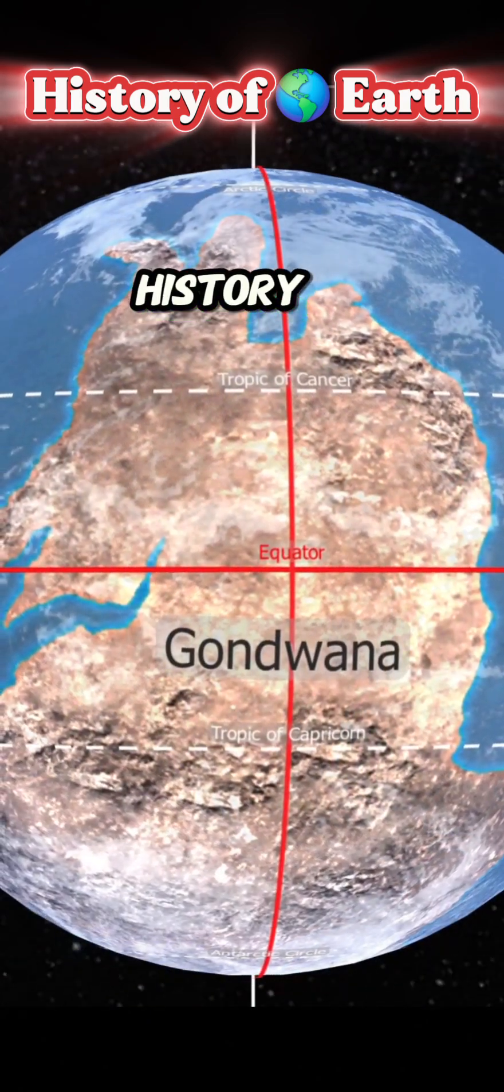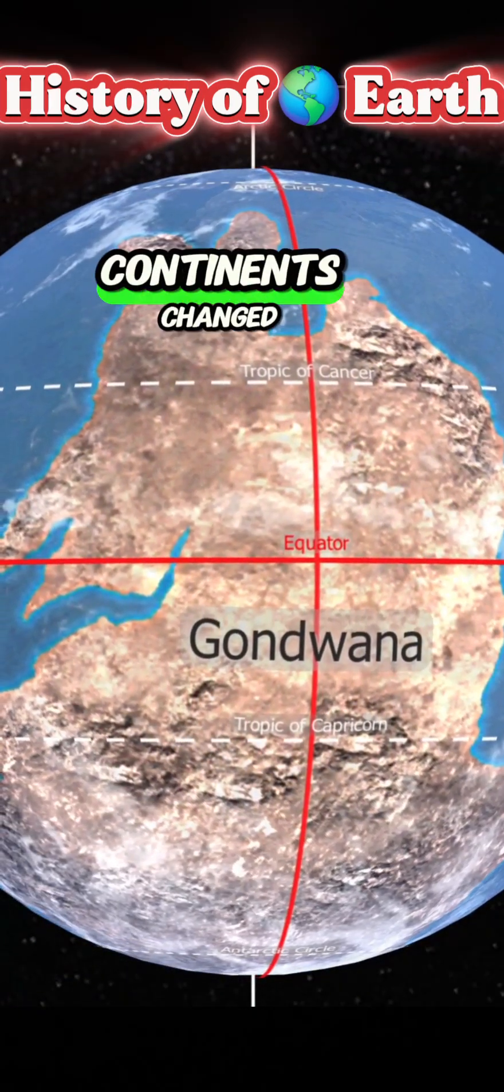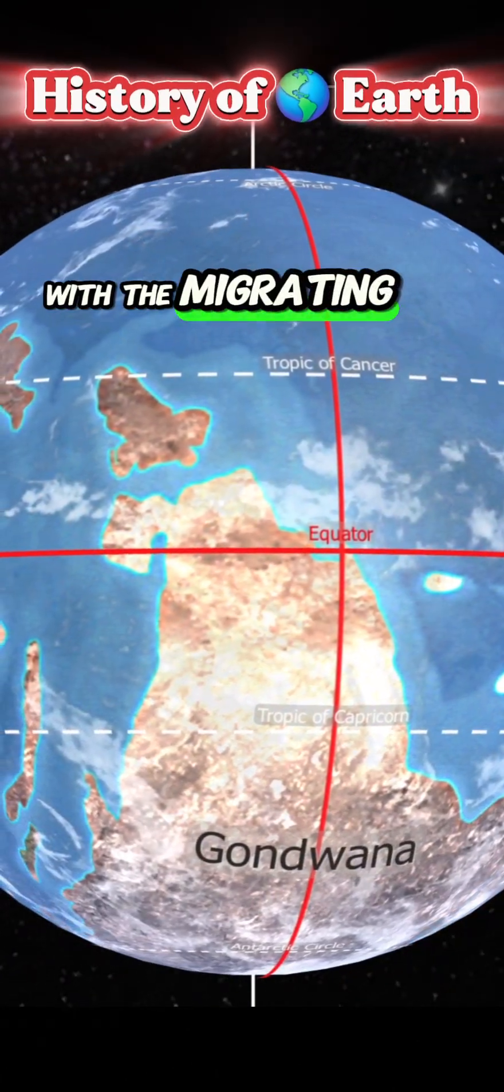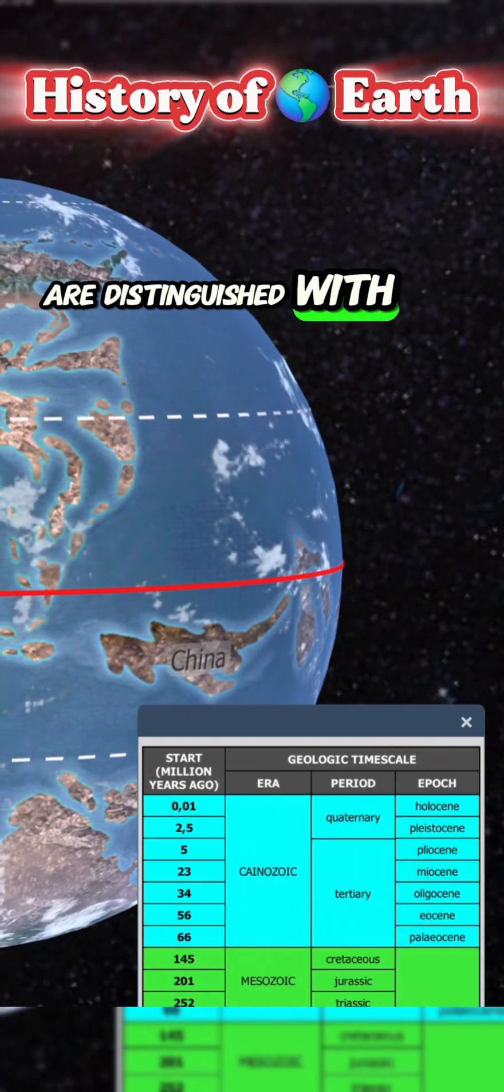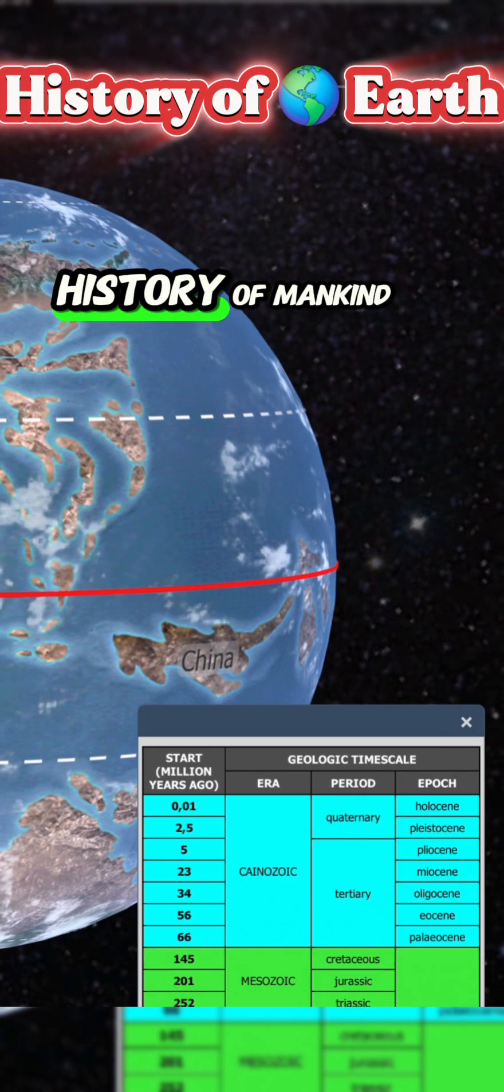Throughout the Earth's history, the outlines and positions of the continents changed with the migrating tectonic plates. Stages of the Earth's history are distinguished with names, similarly to the history of mankind.